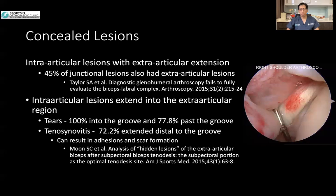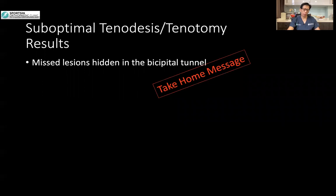A separate study showed that 33% of lesions were concealed because they were not visible from standard glenohumeral arthroscopy. Forty-five percent of junctional lesions also had extra-articular lesions — separate lesions. So even if you find something in the joint, you might find something else, like a skip lesion down the bicipital groove. A Korean study found that 100% of tears extended into the groove, and 77.8% extended past the groove into zone two. Tenosynovitis was also found to extend distal to the groove into zone two and three in 72.2% of cases. We must look out for missed lesions, otherwise we may end up with suboptimal results regardless of whether we do a tenotomy or a tenodesis.